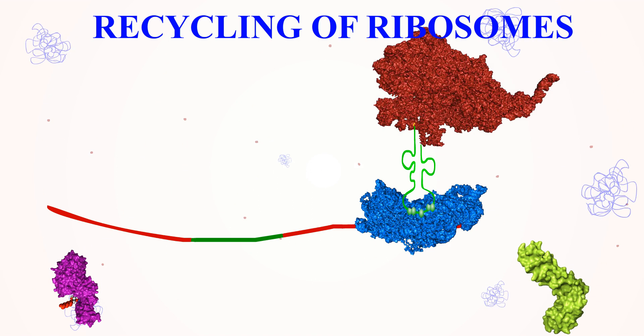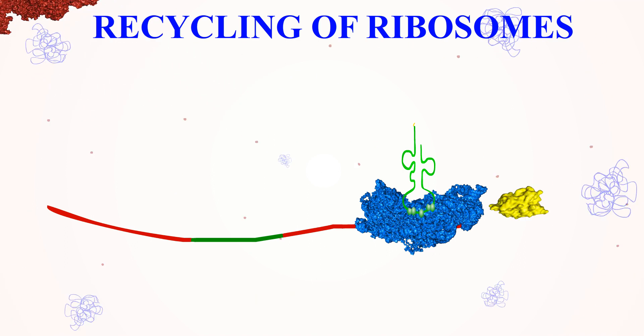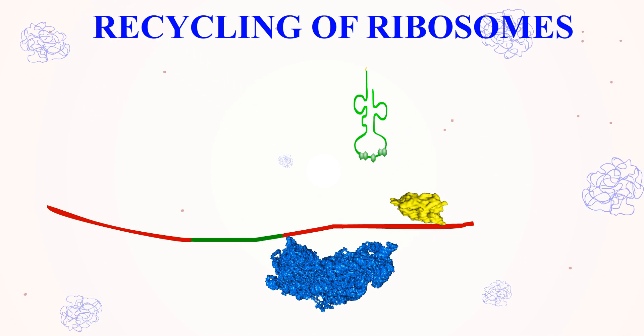This releases the 50S ribosomal subunit, RRF, and EF-G. The dissociation of tRNA from 30S ribosome is promoted by IF3.